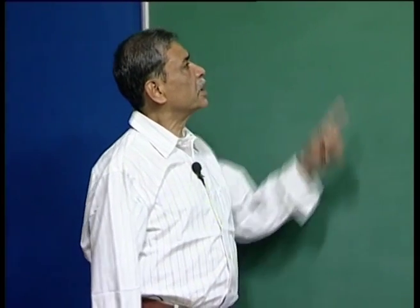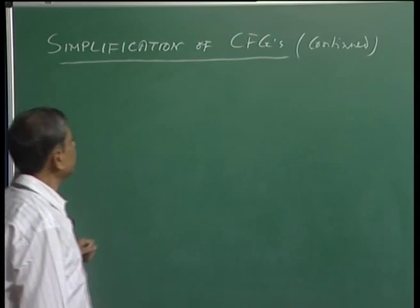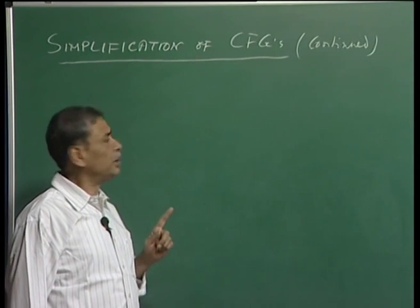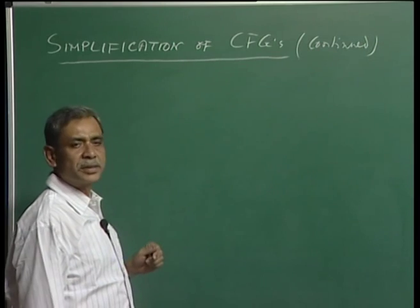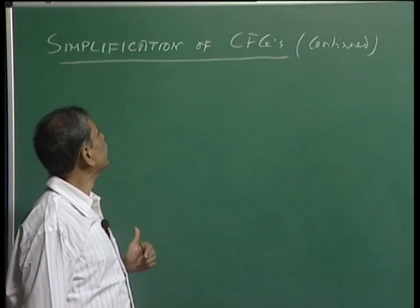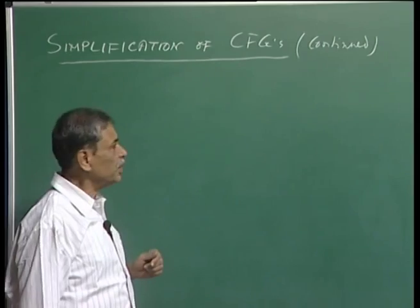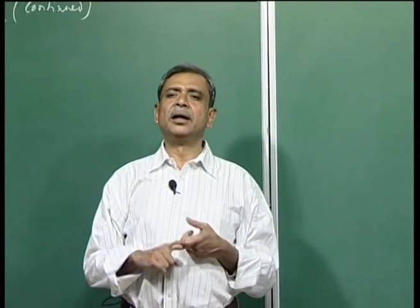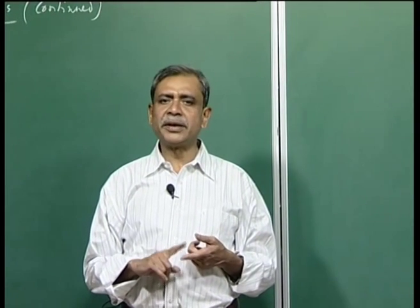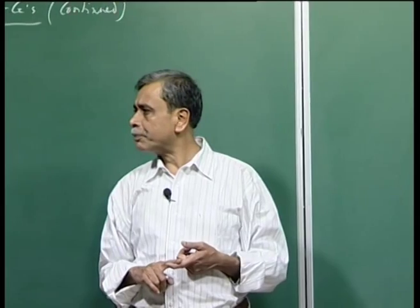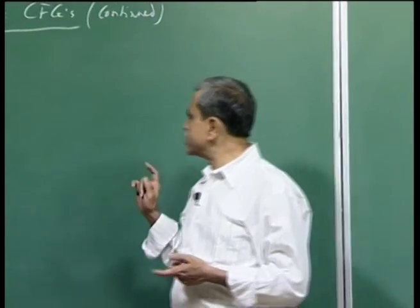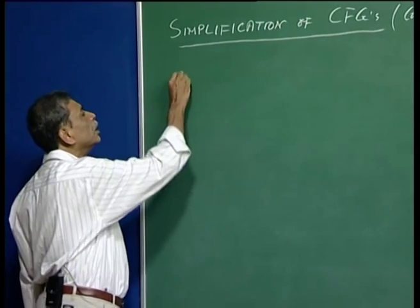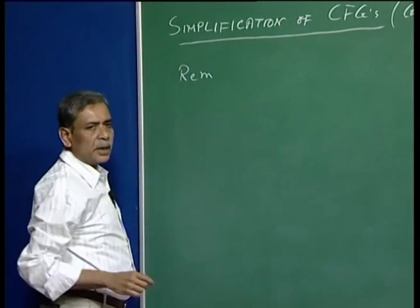We will continue our discussion on simplification of context-free grammars. Last time, we saw how useless symbols can be eliminated from a given CFG to produce a new CFG which is equivalent — the new CFG also generates the same language as the old CFG. Today, let us discuss how to remove so-called epsilon productions.